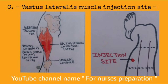The next IM injection site is Vastus Lateralis. This site is used mostly for infants less than 7 months of age. To locate the Vastus Lateralis muscle for IM injection, divide the front thigh into thirds both vertically and horizontally to make 9 squares, as shown in the diagram. The outer middle square is the injection site.